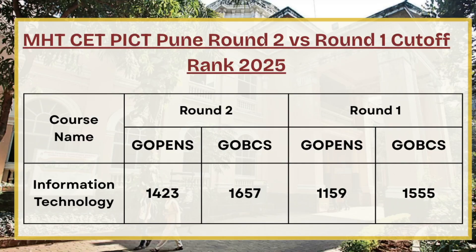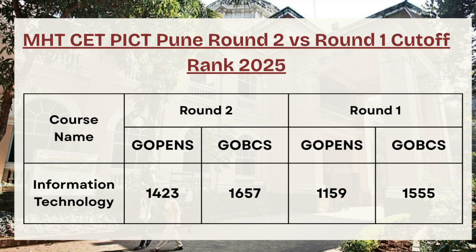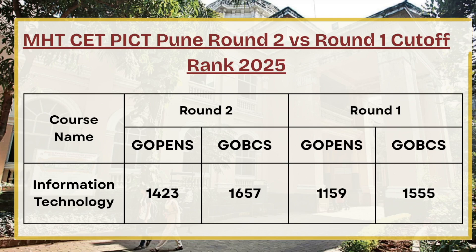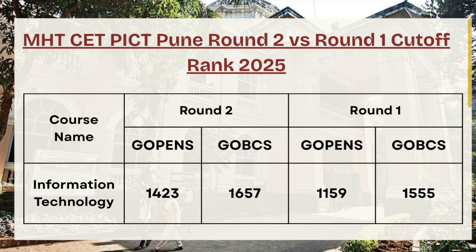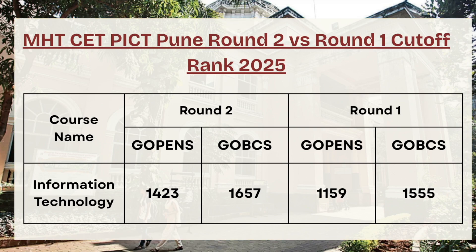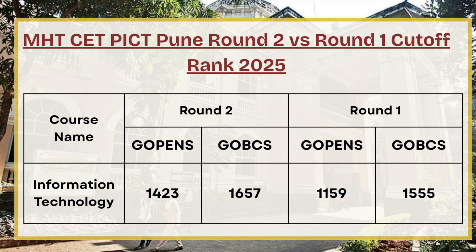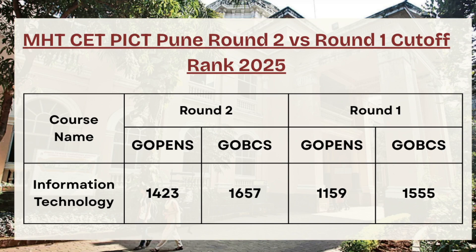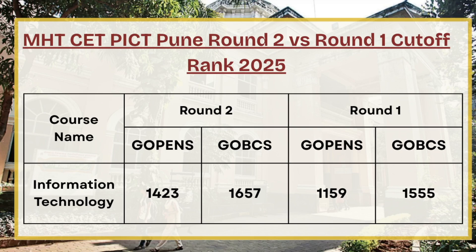First in the list we have Information Technology. For G Open category, the Round 2 cutoff rank is 1423, whereas for Round 1 the cutoff rank is 1159, so there is a total gap of 264 between Round 1 and Round 2. In Round 3, candidates can expect an increment of around 300 to 400 rank for G Open category.